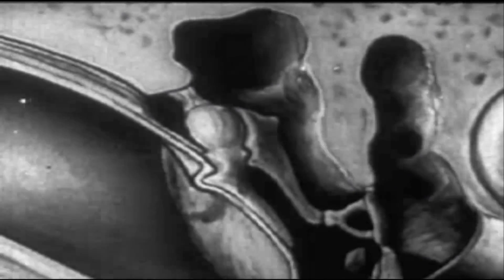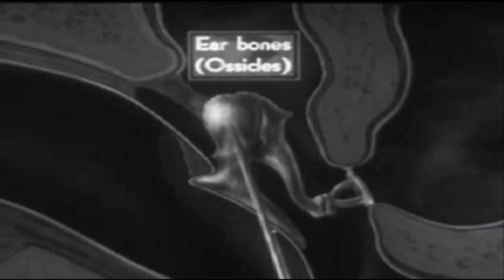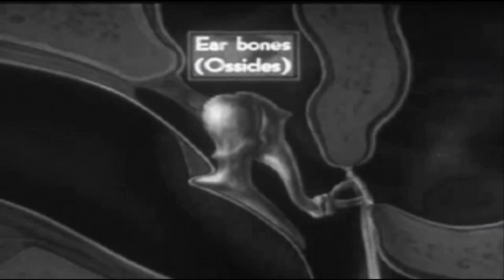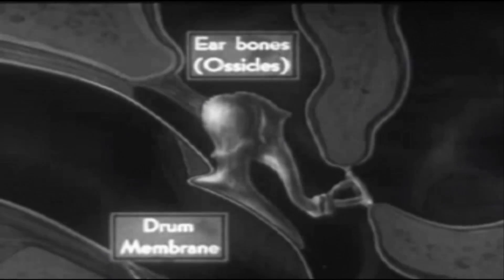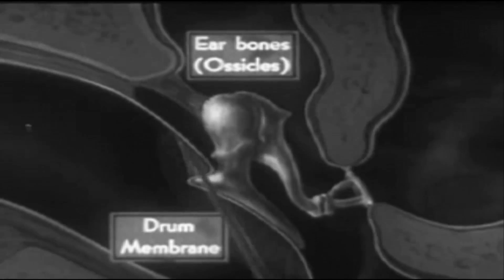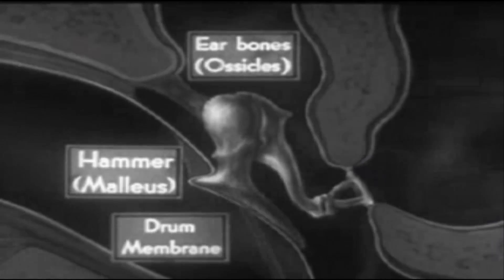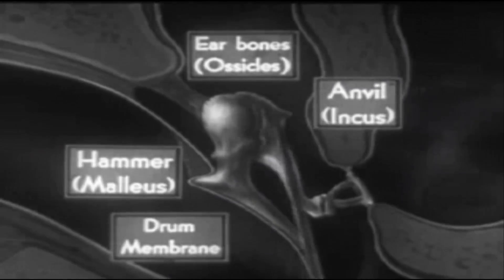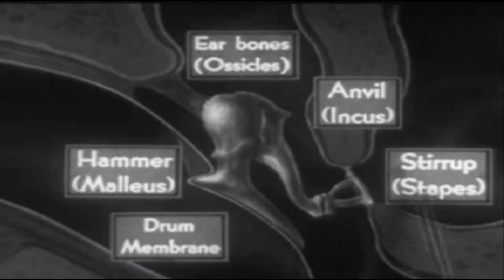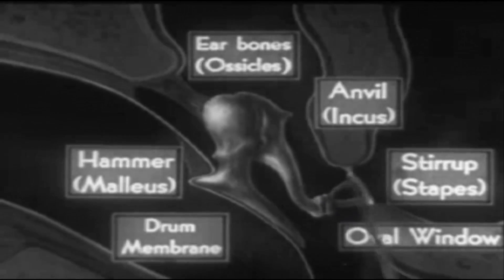And now let's look at a still larger view of the middle ear with its three ear bones or ossicles, and then see what happens when sound waves strike the drum membrane. This bone, consisting of a head and handle, is called a hammer or malleus, and is fastened by the handle to the drum membrane. United to the malleus by a joint is the anvil or incus, which in turn touches the stirrup or stapes. The footplate of the stirrup is attached by a movable ligament to an opening, which is called the oval window.